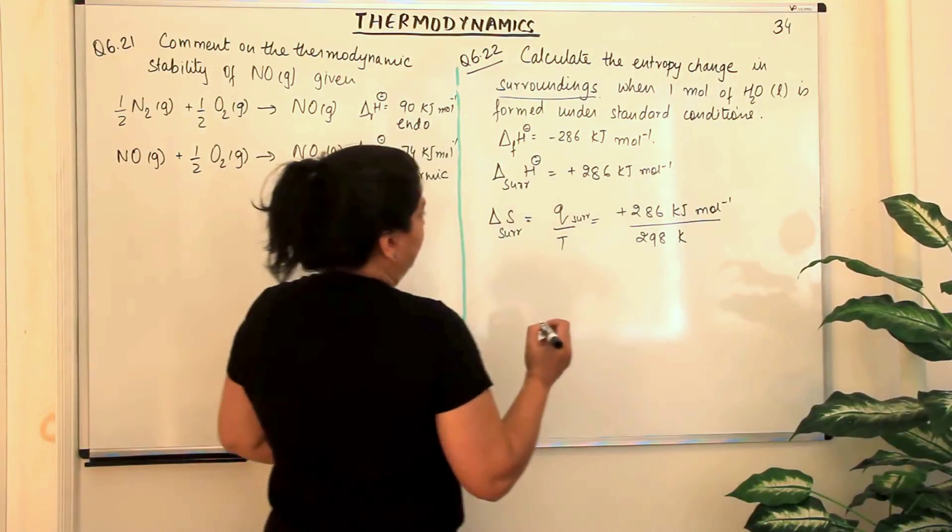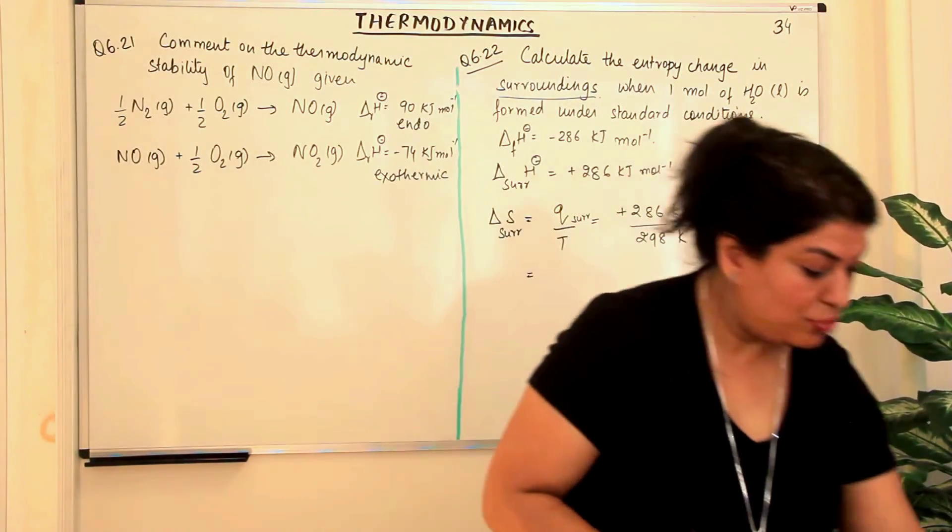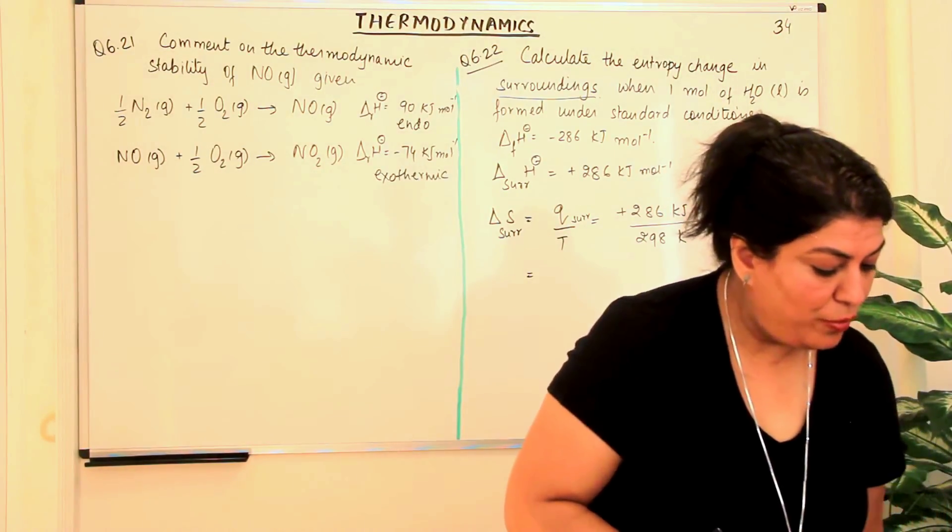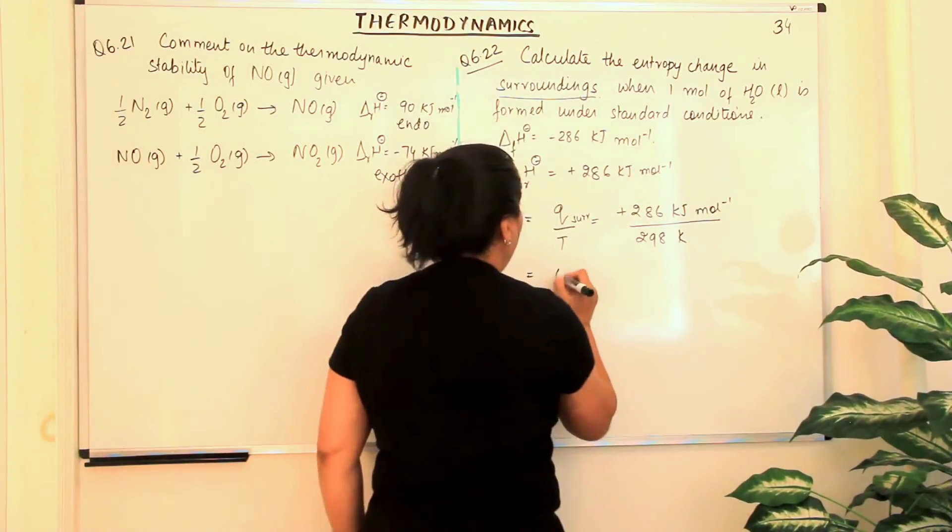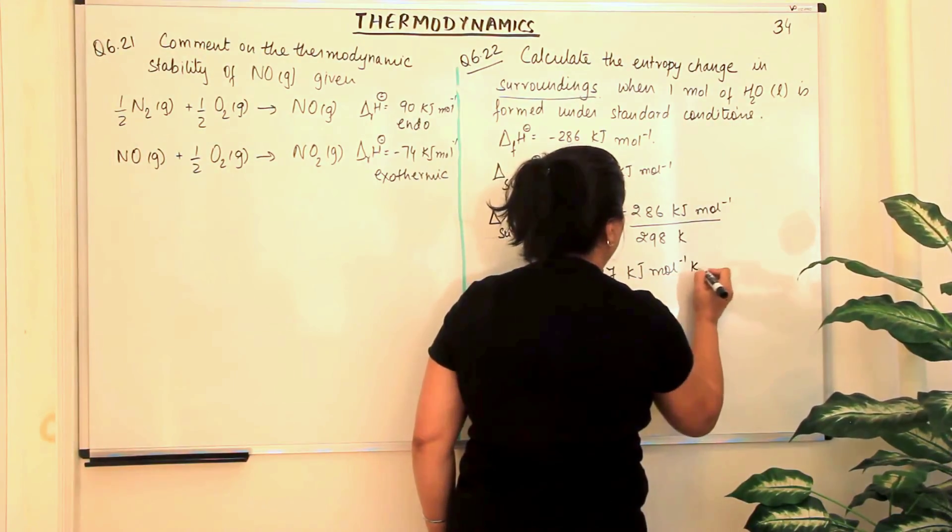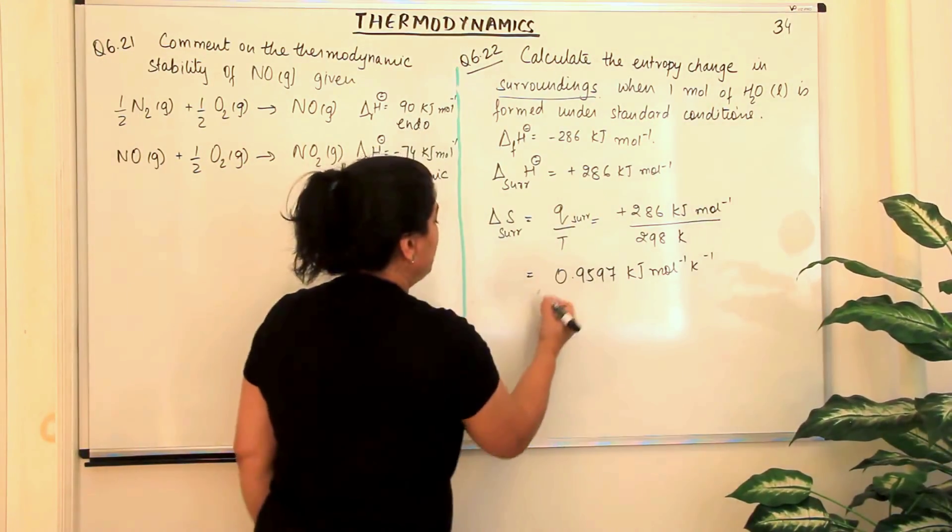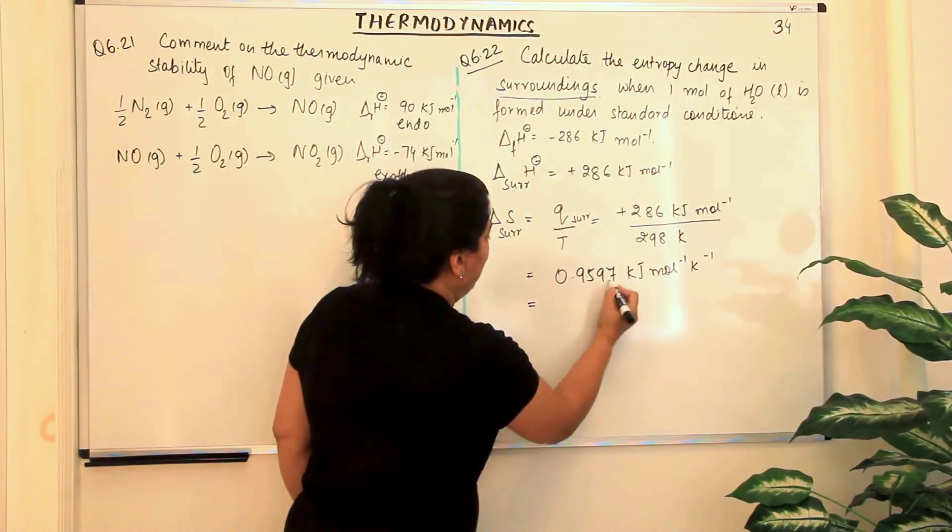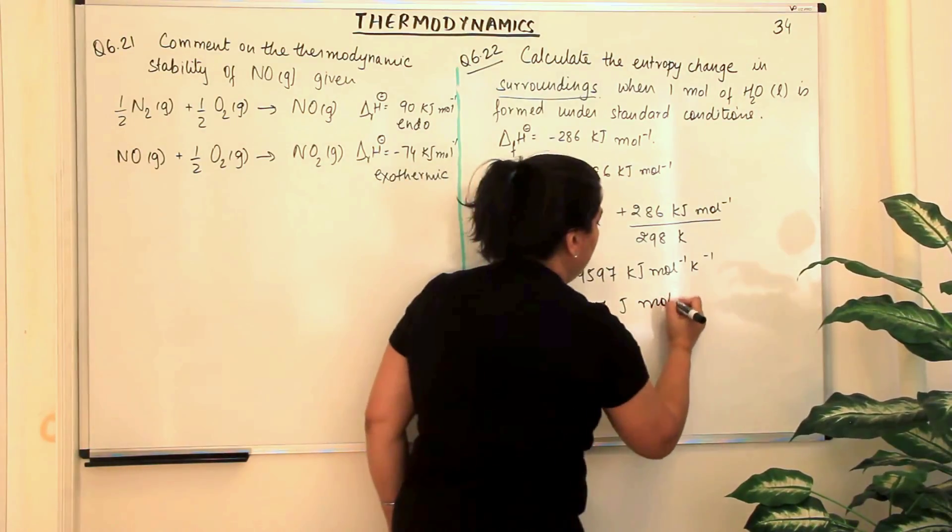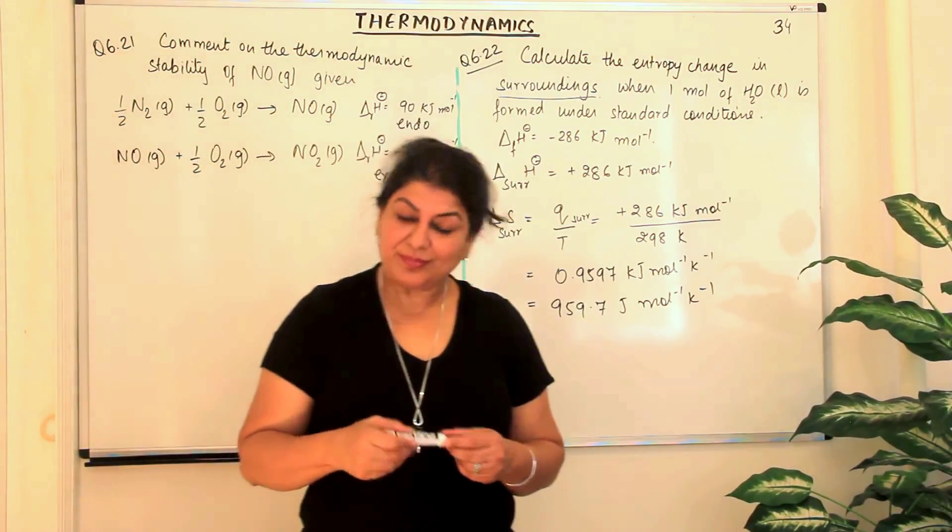So from this you calculate the value of delta S and it will turn out to be 0.9597, 0.9597 kJ per mole per Kelvin. And since this is a very small number, let's turn it into joules multiplied by 1000, so it will be 959.7 joules per mole per Kelvin. So that turns out to be the value of delta S of the surroundings.